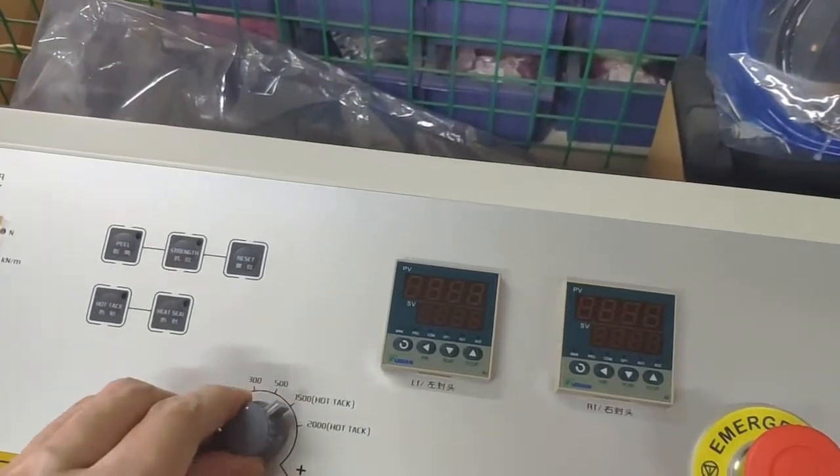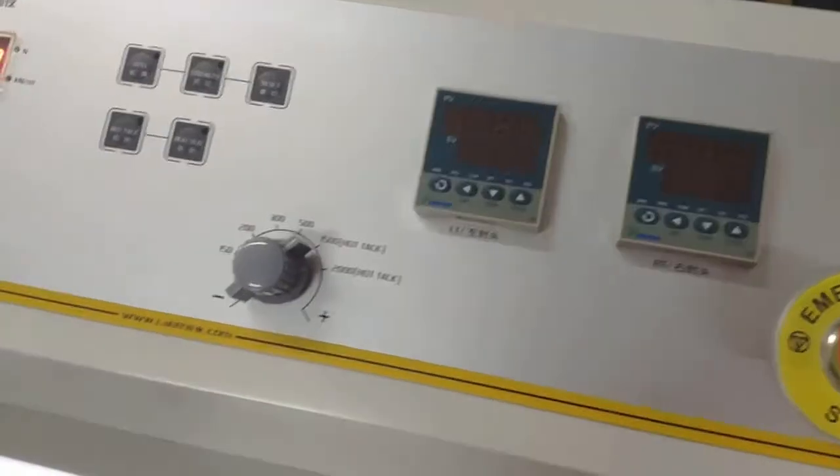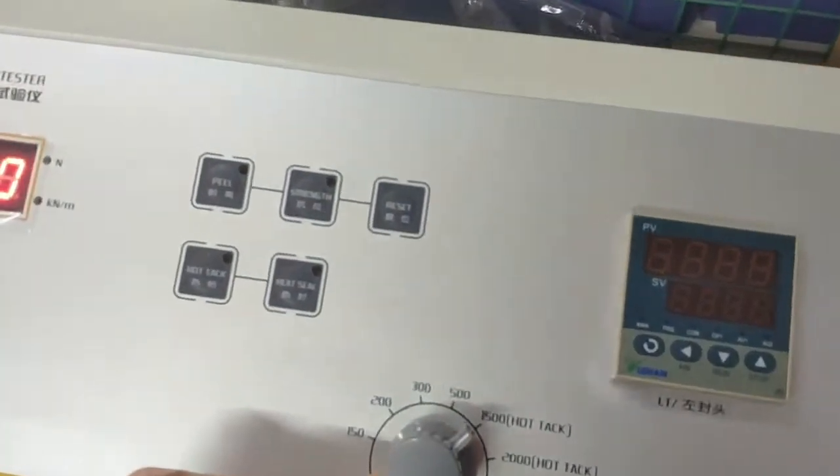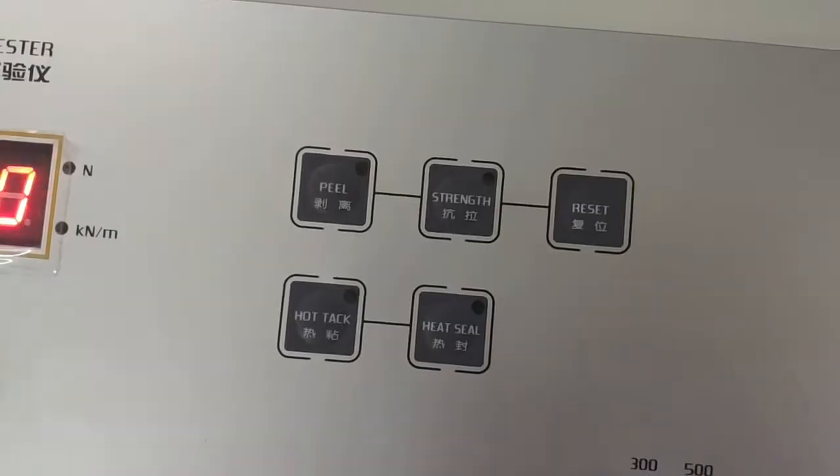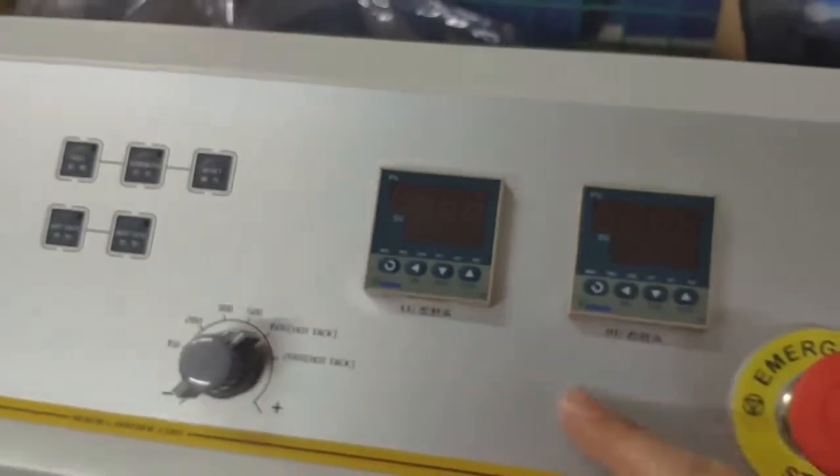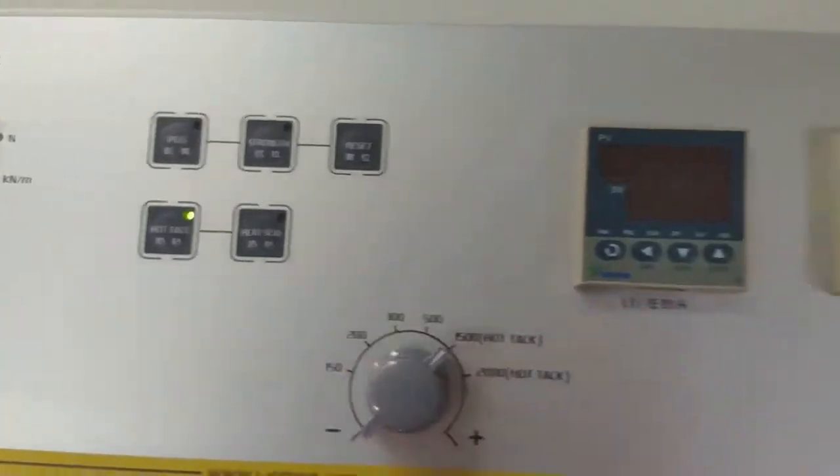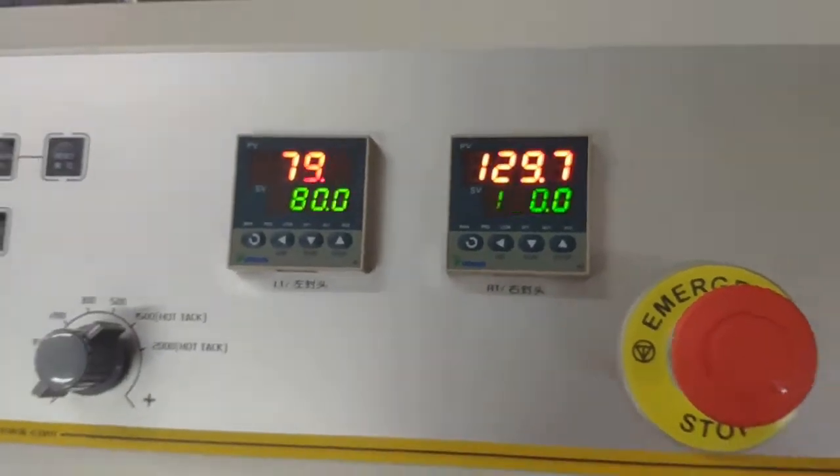If you want to do hot tack, make sure the mode is on hot tack. You have to select hot tack or heat seal to activate these temperature controllers. Press the hot tack button, then the temperature controllers start working.